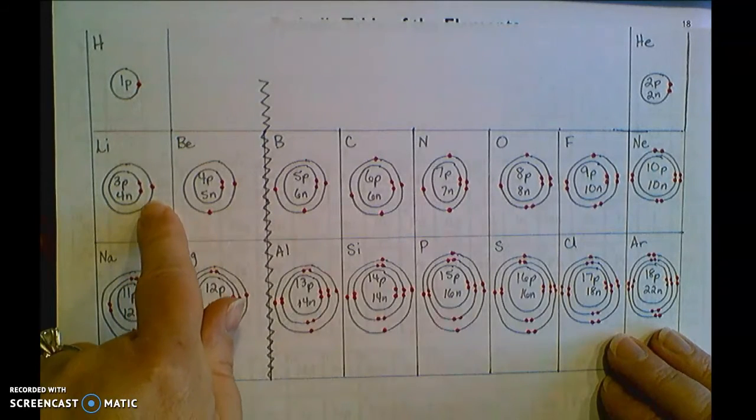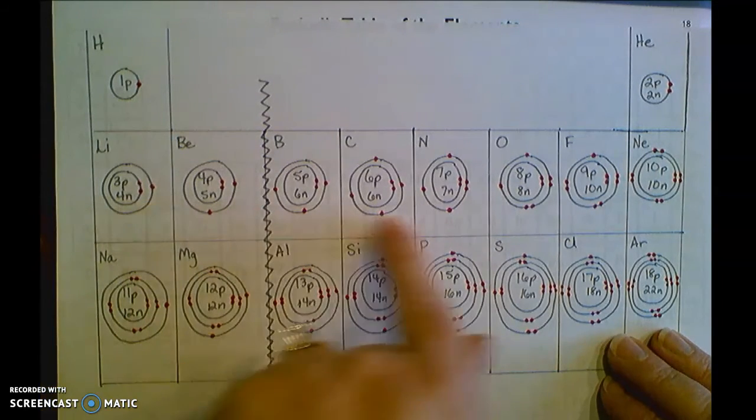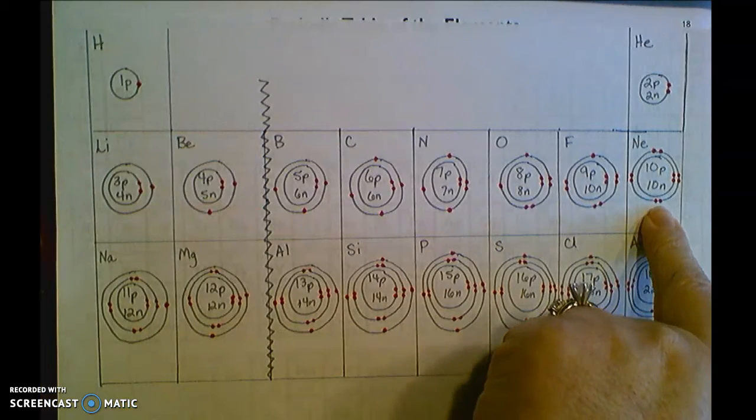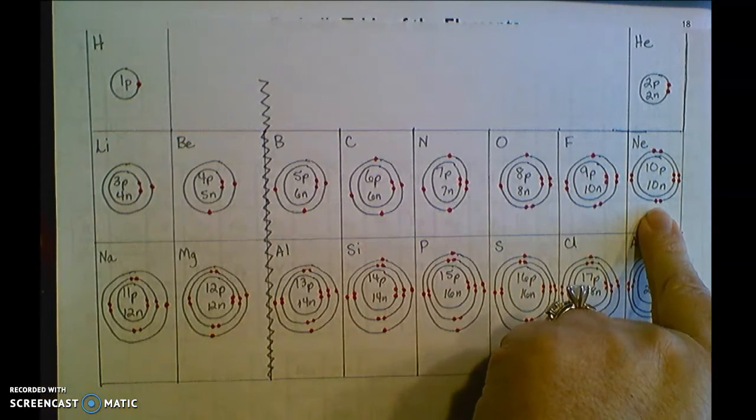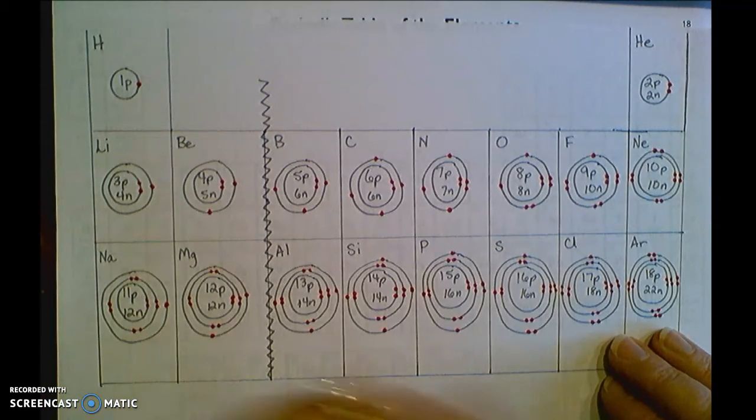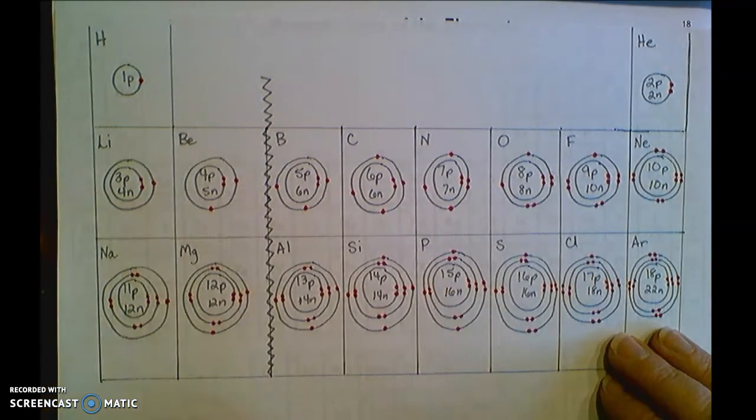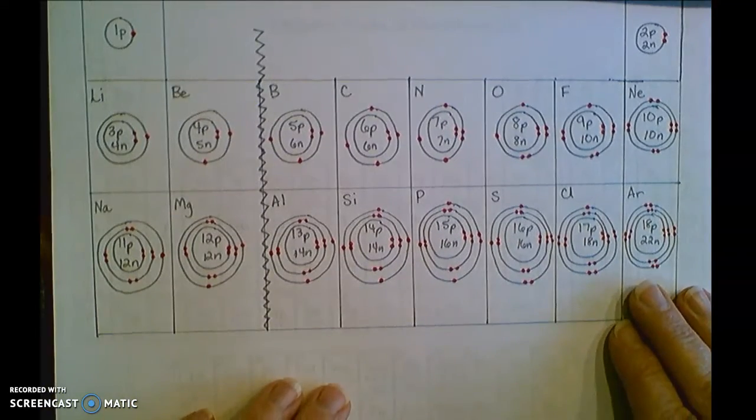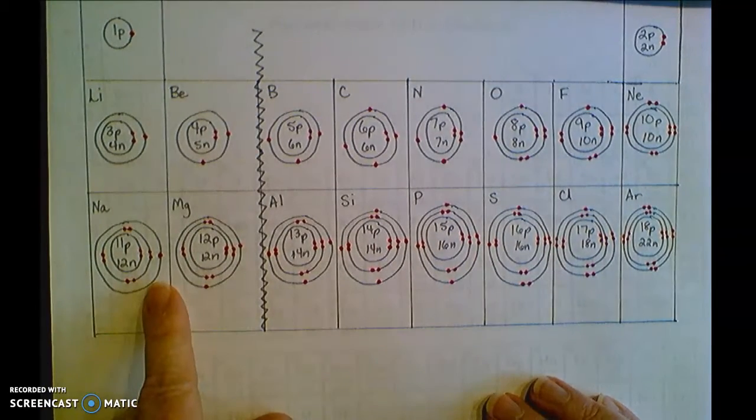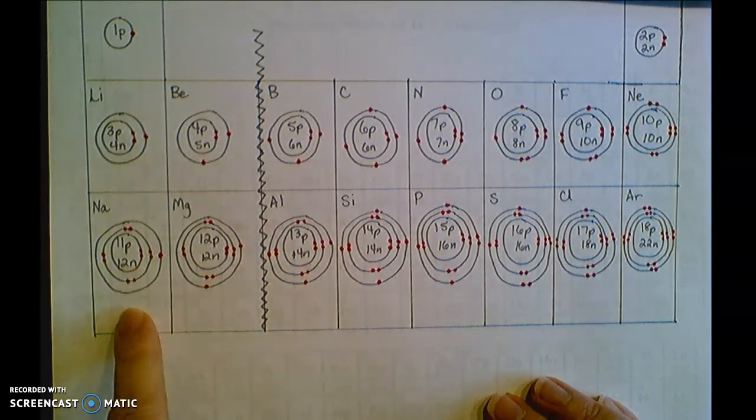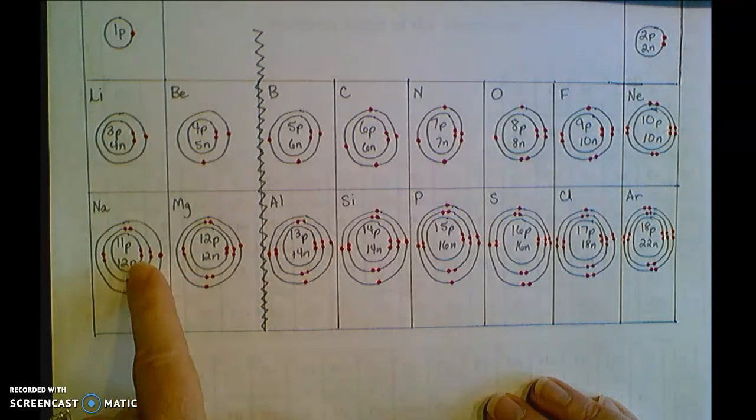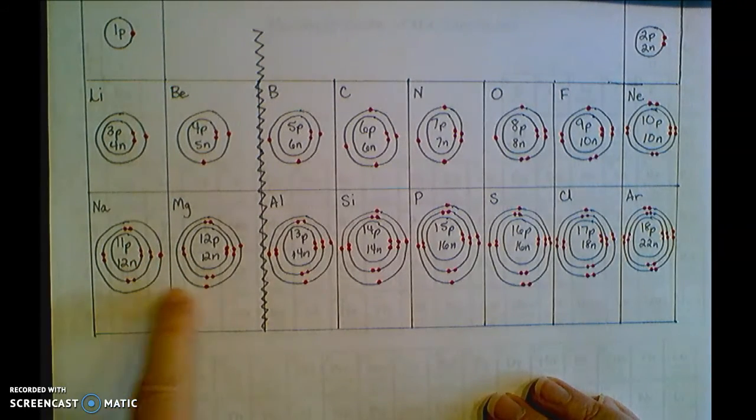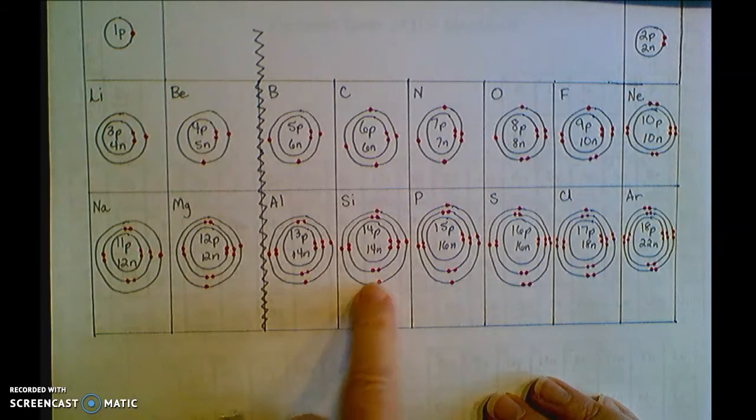So starting here with only one electron in that second energy level, all the way out till you get it filled up with eight electrons here. So row two, two energy levels. If you get to row three, now you have three energy levels. Same thing. First and second energy level are filled up, and then we start to fill up that third energy level.